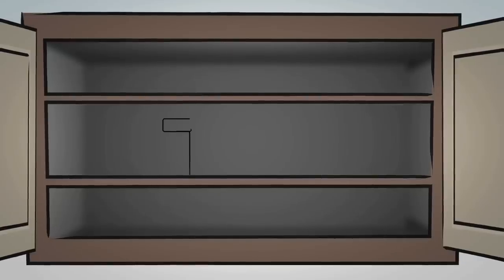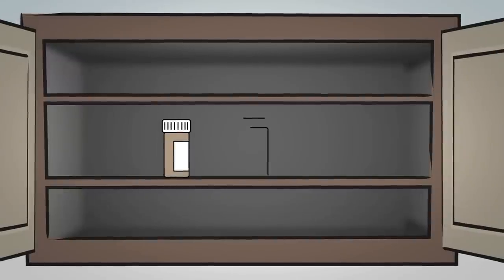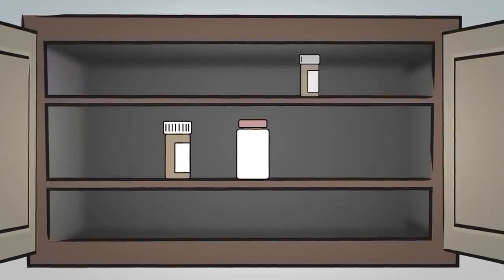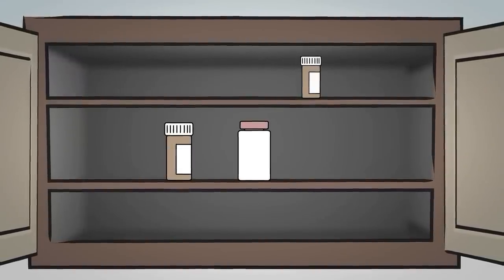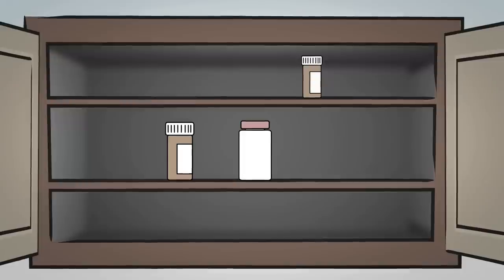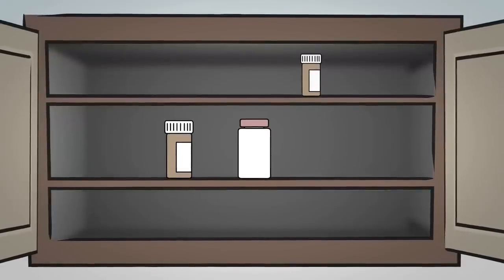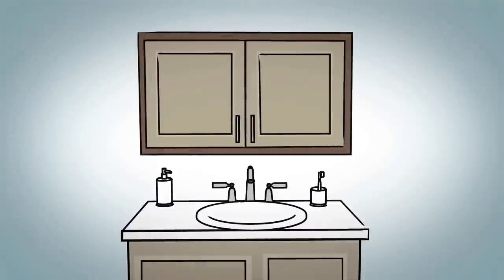First, it's best to store all your family's medicines—prescription, over-the-counter, vitamins, and supplements—in a high, locked cabinet or closet where children can't see or reach them. If you don't have a locked location, make sure medicines are high and out of sight: up and away.